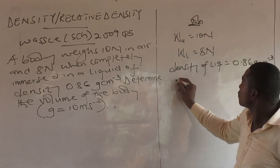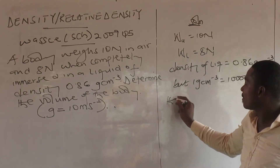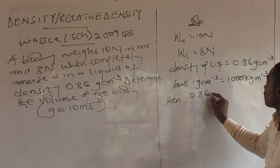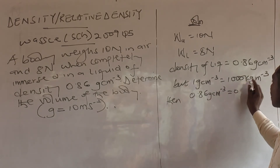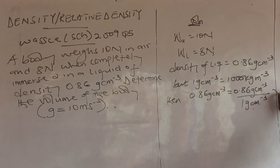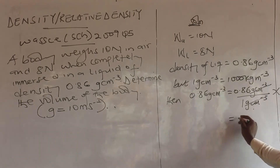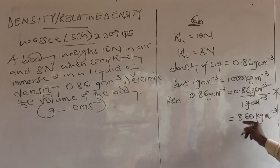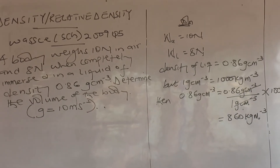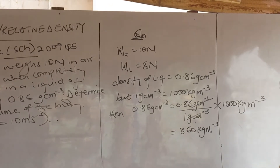The conversion is: 1 gram per cm³ equals 1000 kg per cubic meter. So 0.86 gram per cm³ becomes 0.86 times 1000 kg per cubic meter, which gives 860 kg per cubic meter. That is the density of the liquid in SI units. The reason for the change is that our other parameters are in standard units, so density must also be in the SI unit of kilogram per cubic meter.